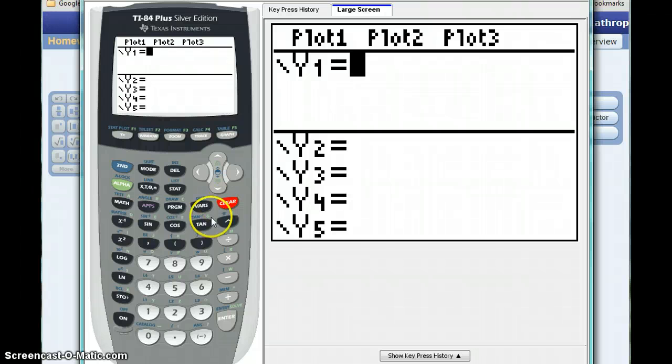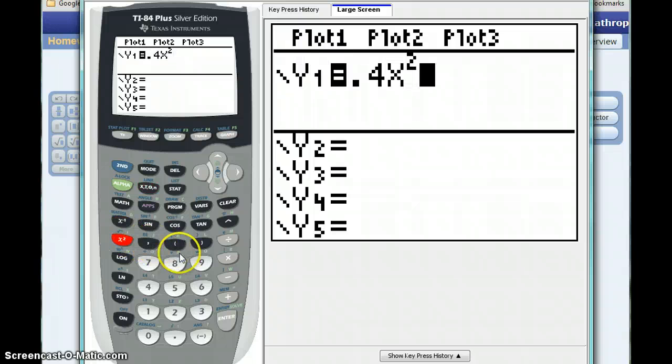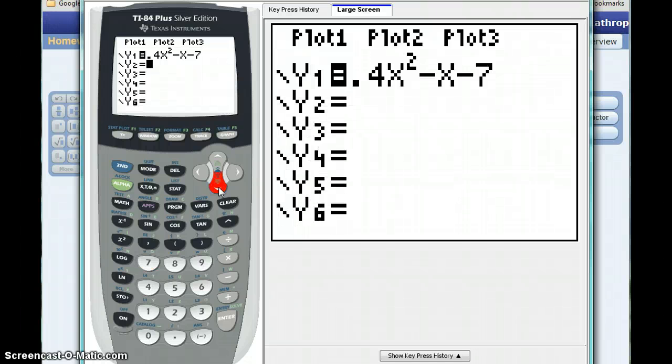We'll clear that y equals screen and type in this new function that we're given, 0.4x squared minus x minus 7. What we want to do is construct a graph that shows the intersection of that function with the function g of x equals 3, or y equals 3.